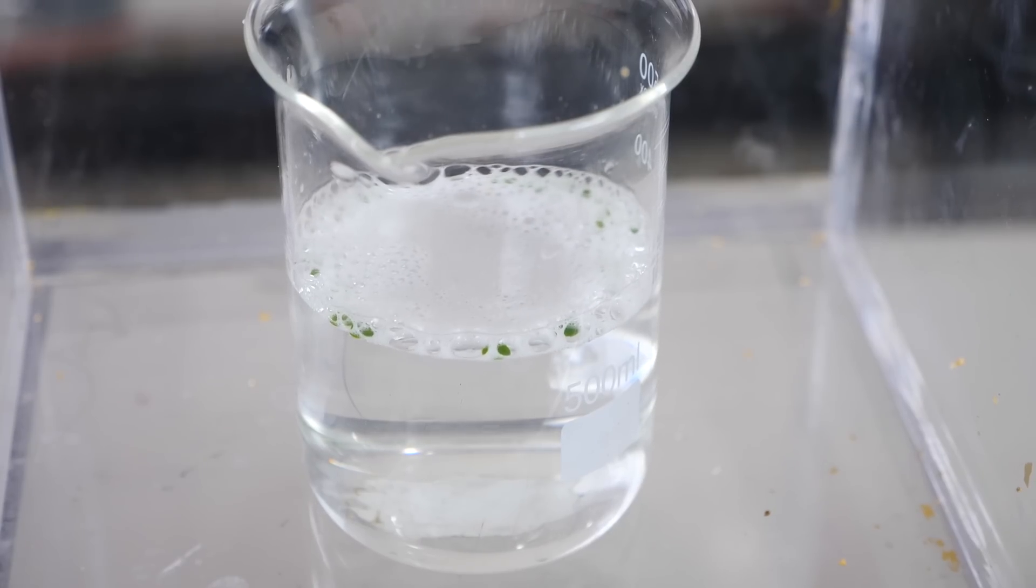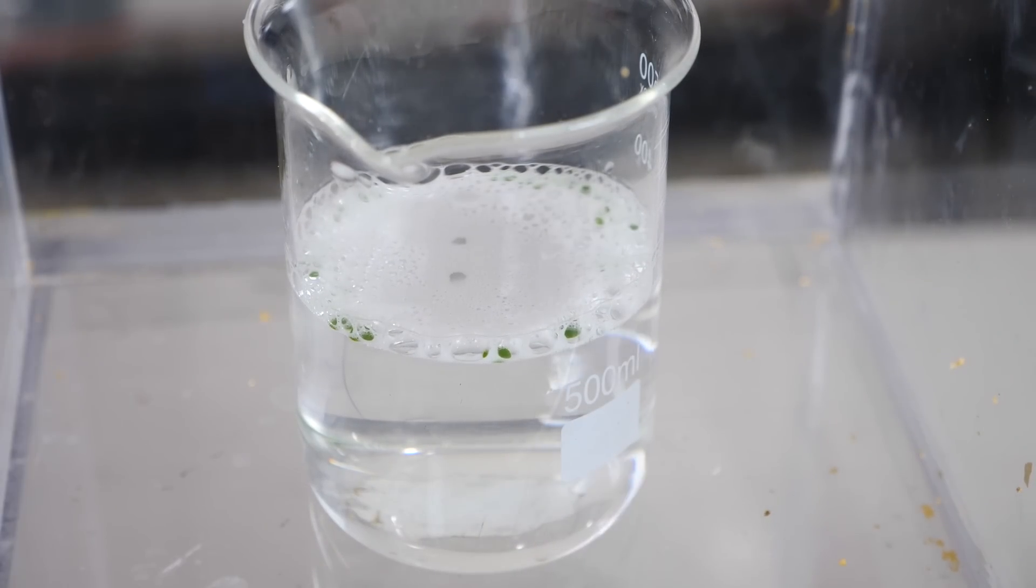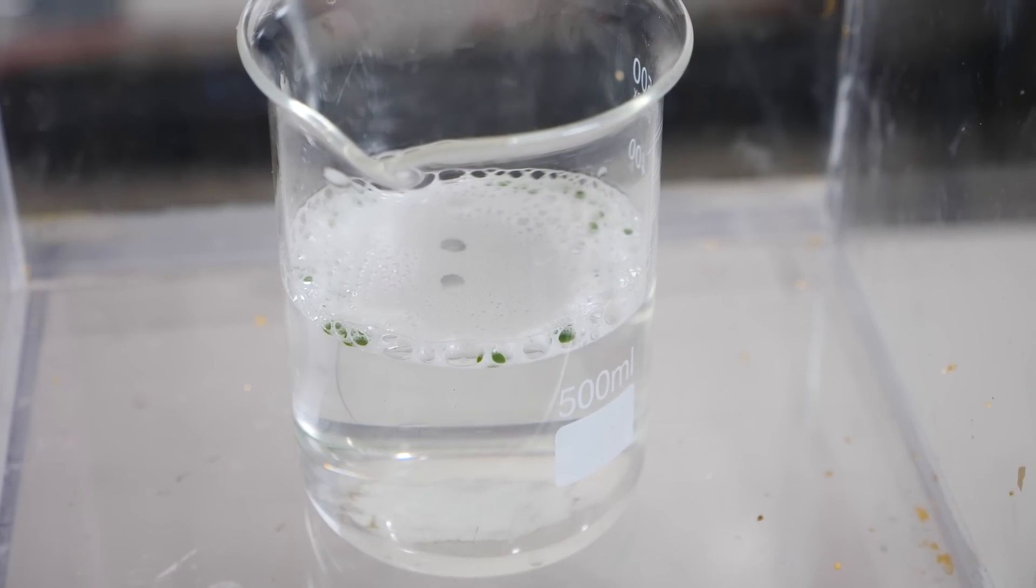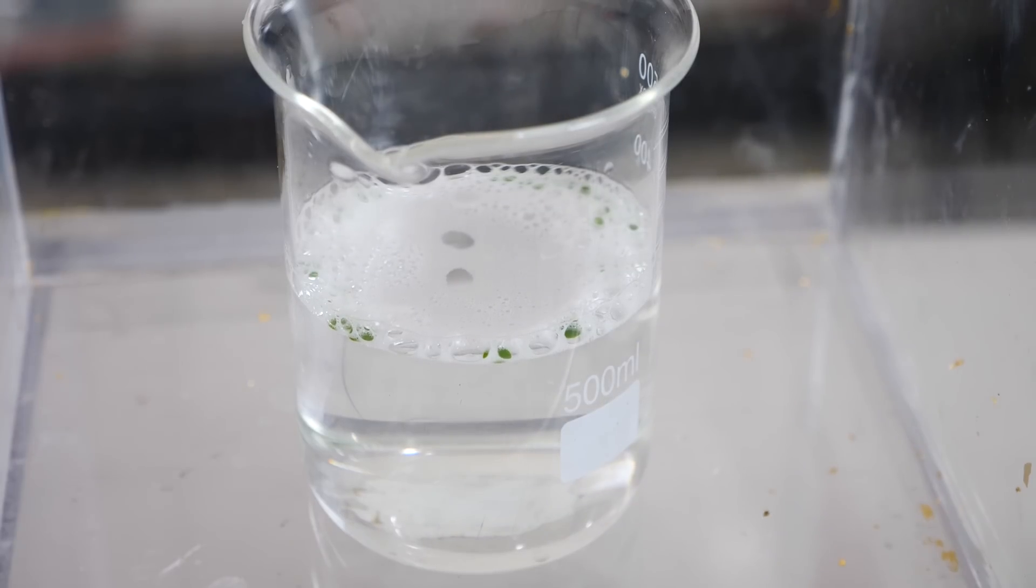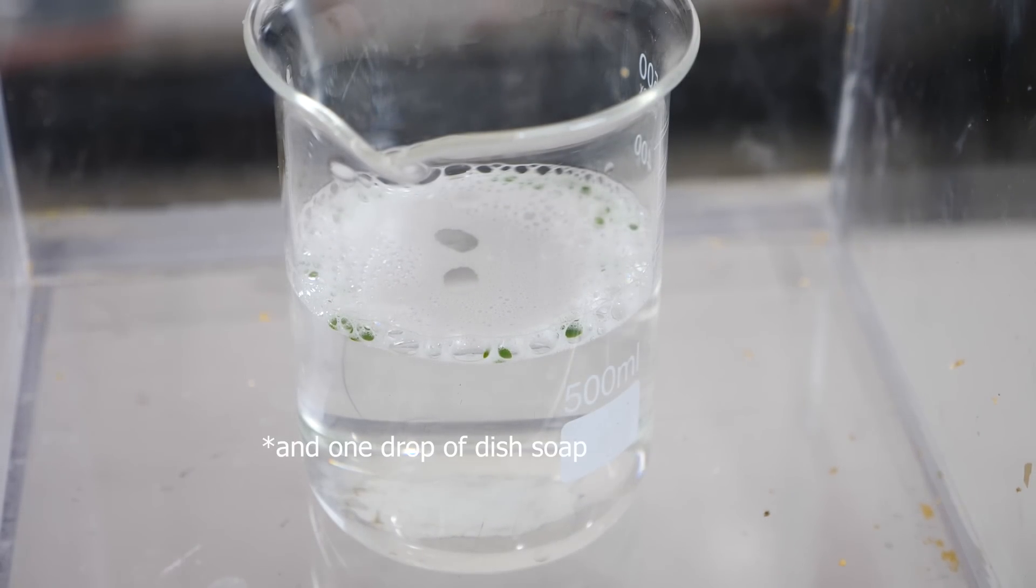Now the solution that I'm using is sodium bicarbonate or baking soda. So you're just using an eighth of a teaspoon for around 300 milliliters. And what that's doing is just making a solution that has a good amount of carbon dioxide in it.